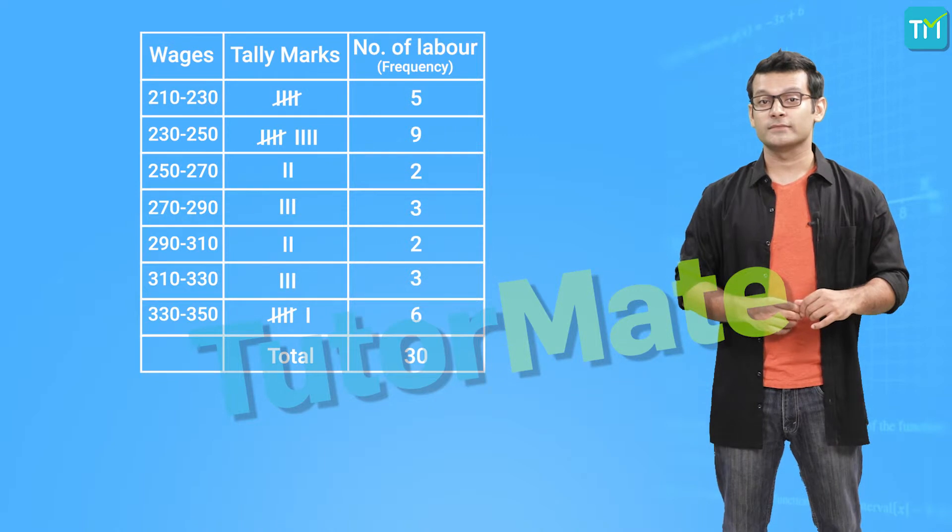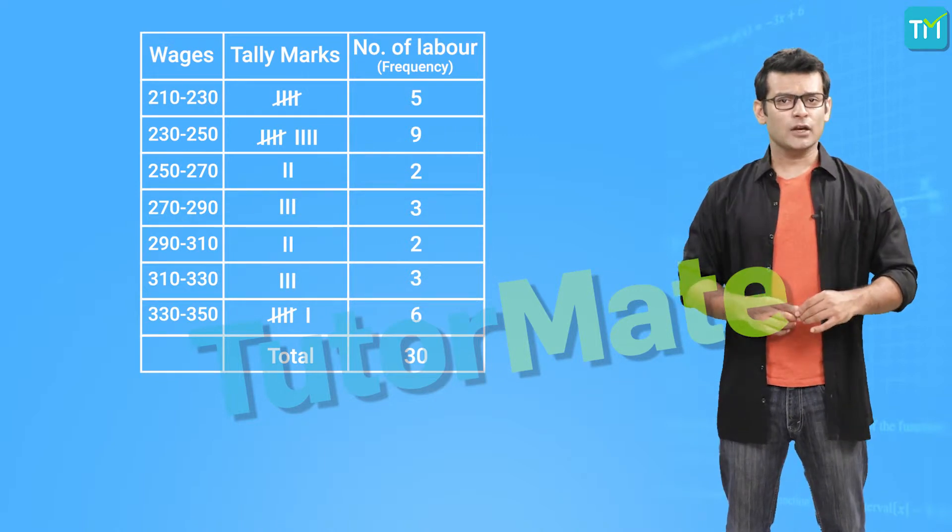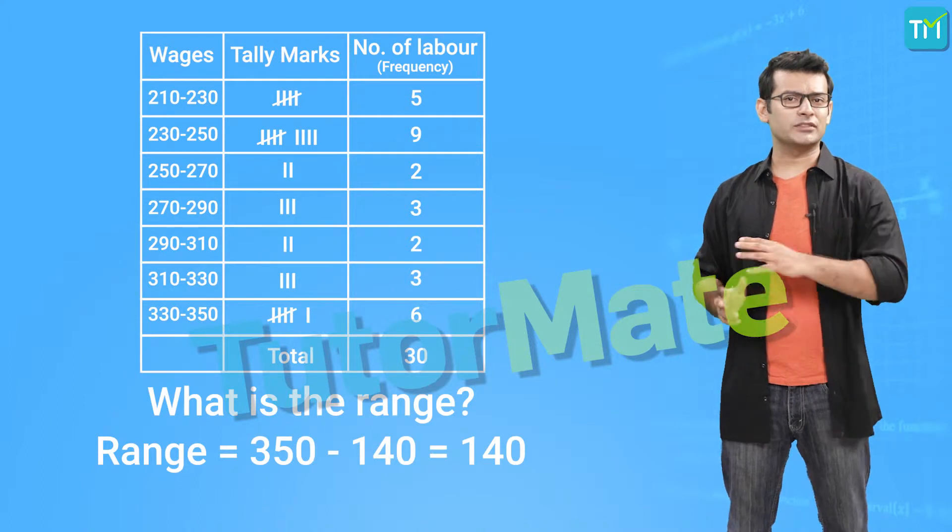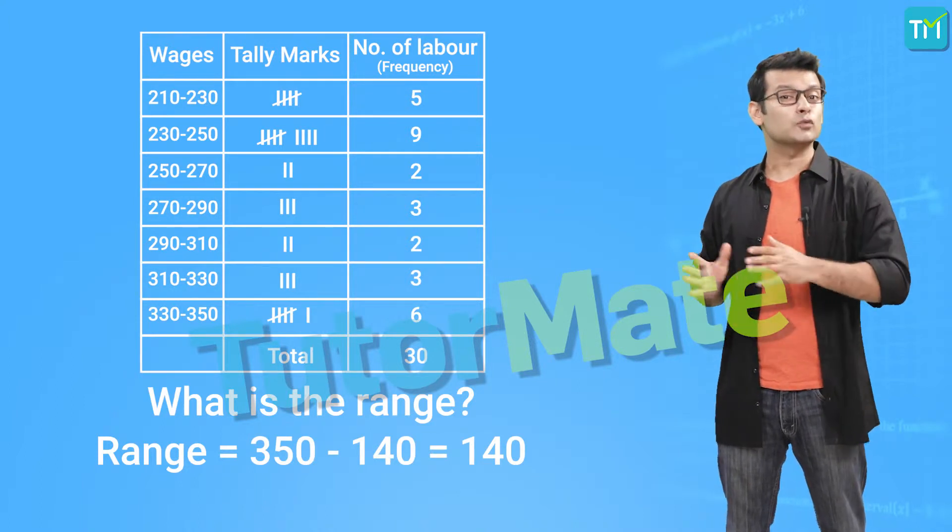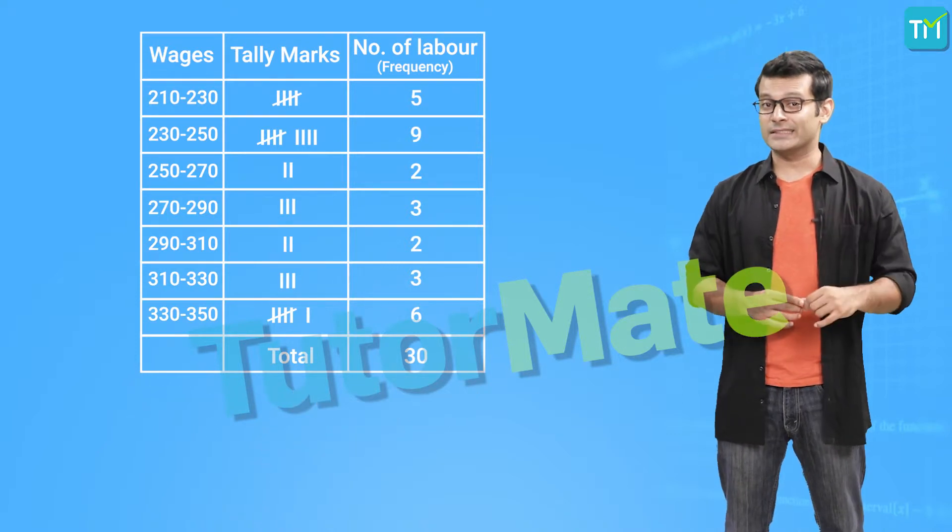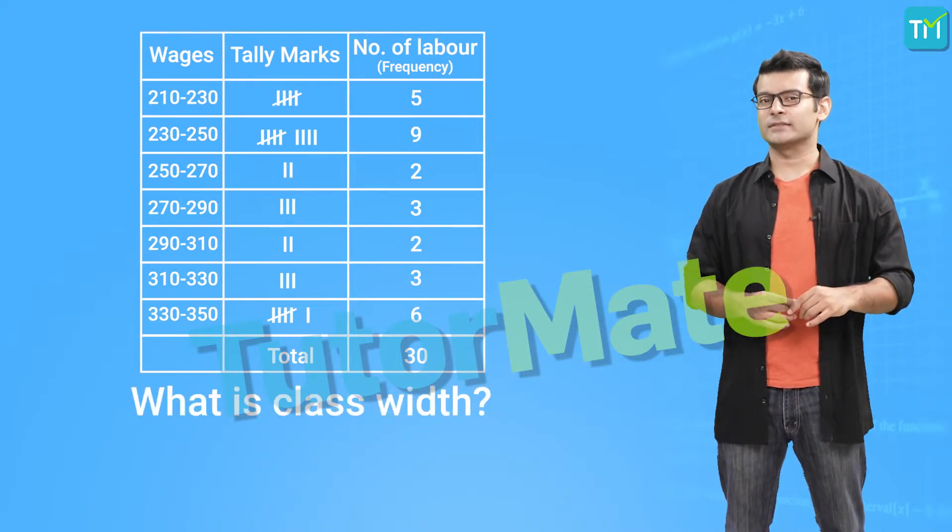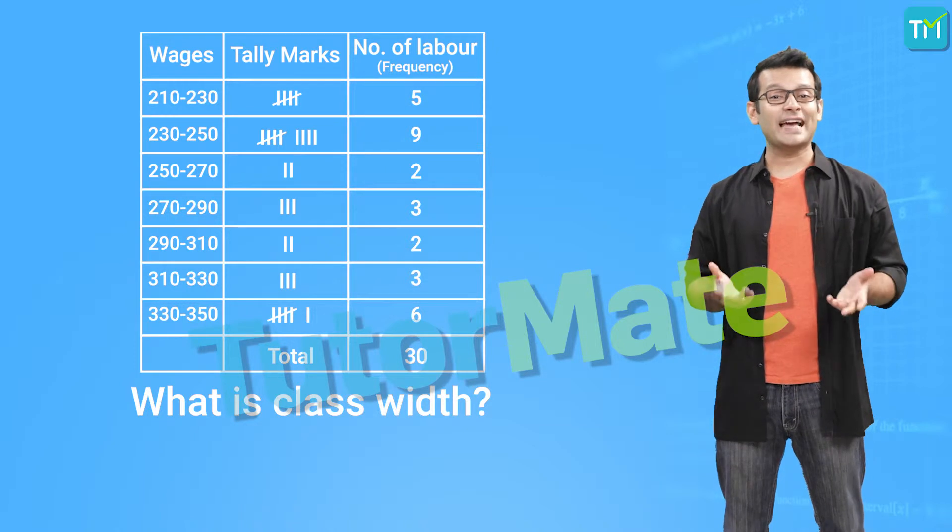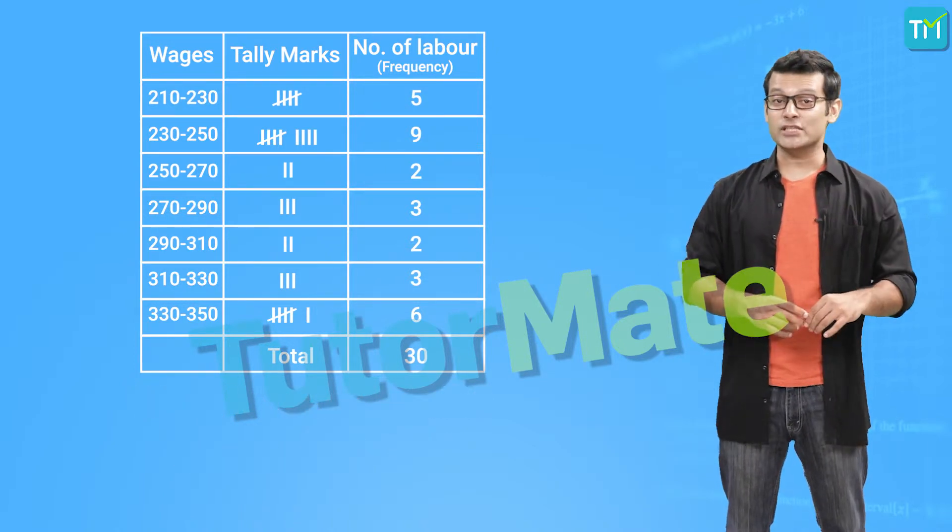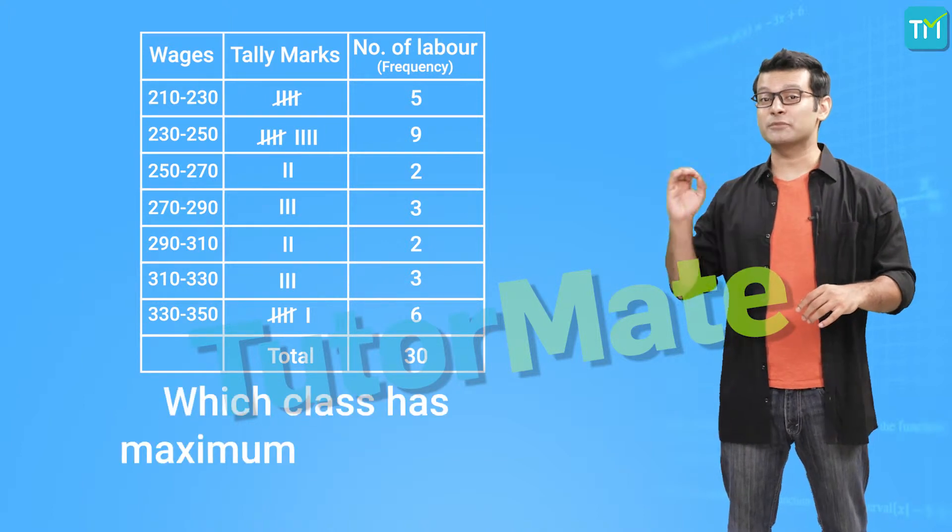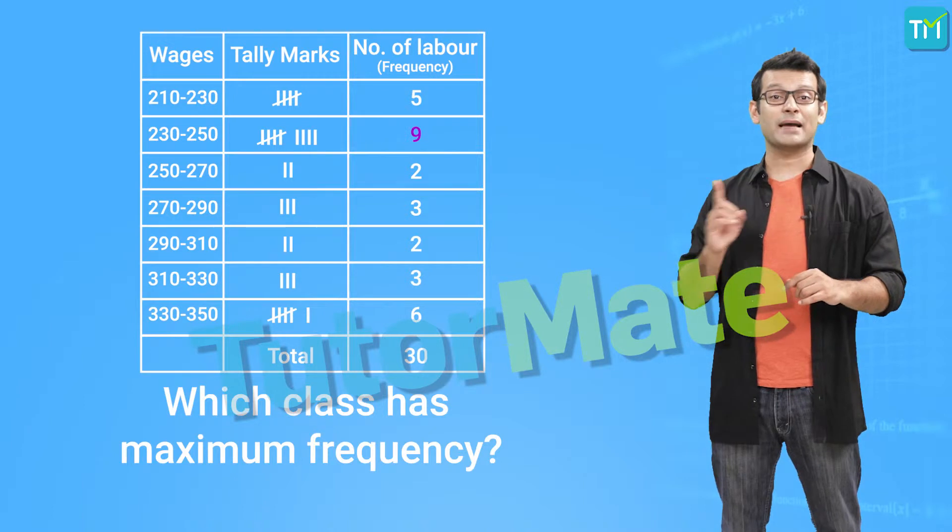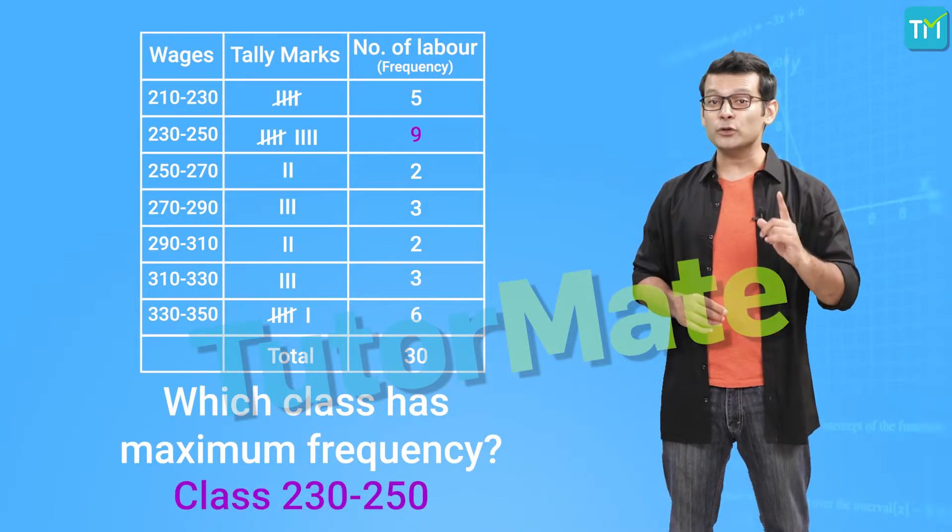Moving on, we will now try to answer a few questions related to this frequency distribution. The first question is, what is the range? We have already calculated the range and we know that it is equal to 140. Next, what is the class width? Again, we have already calculated it and it is equal to 20. And the third question is, which class has the maximum frequency? From the table we can see that 9 is the maximum frequency and it corresponds to the class of 230 to 250.